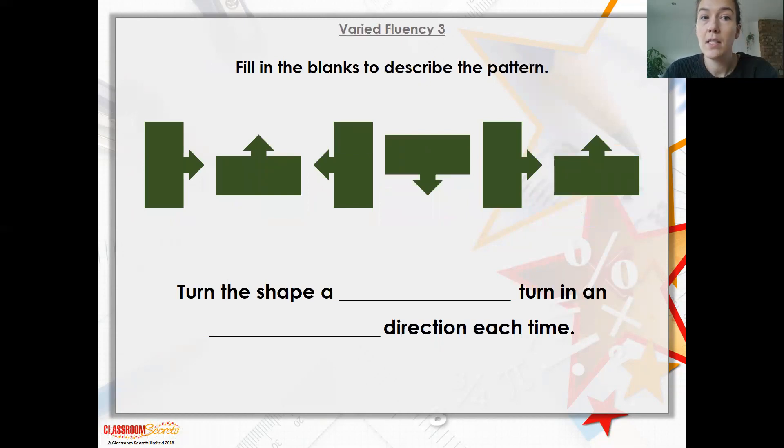Then some of your questions today will be to fill in blanks to describe the pattern, or you will literally just be describing it. I might give you a pattern and I might want you to describe what's happening. So we've got a shape here. It's got a sort of arrow on it. What is happening to that shape? Which way is it turning? So it says, turn the shape a certain turn in a certain direction each time.